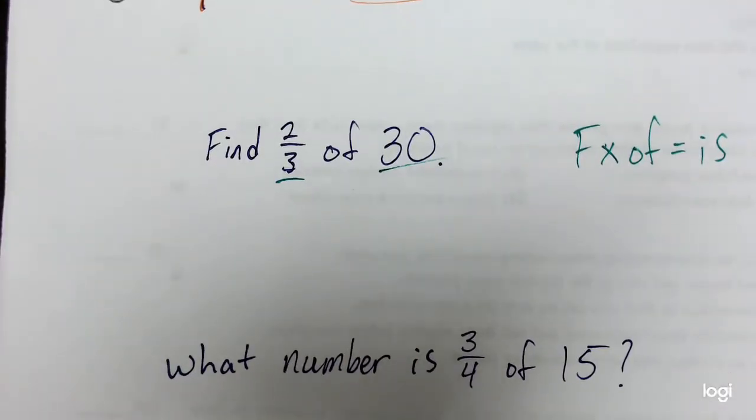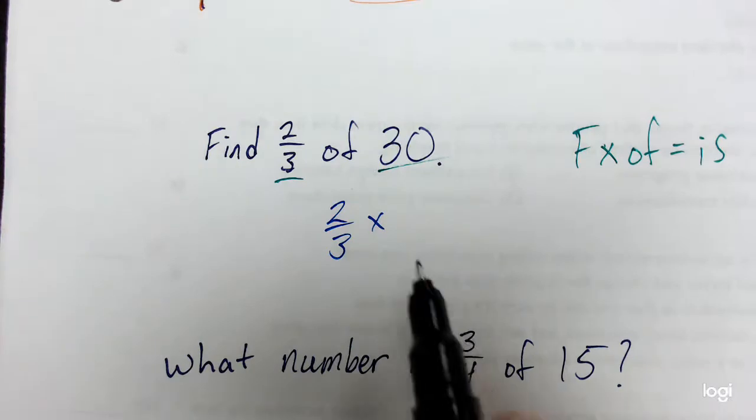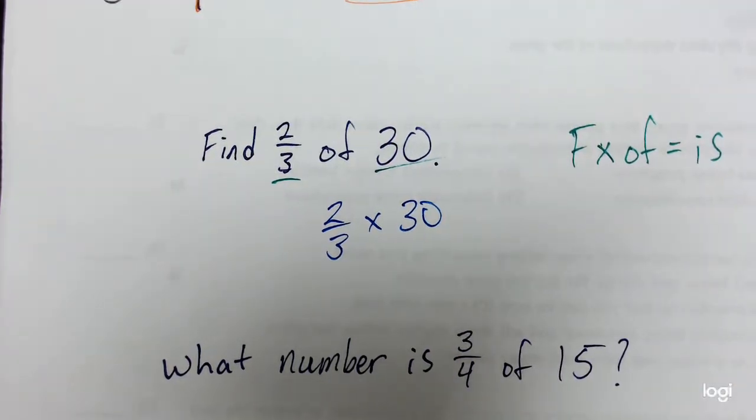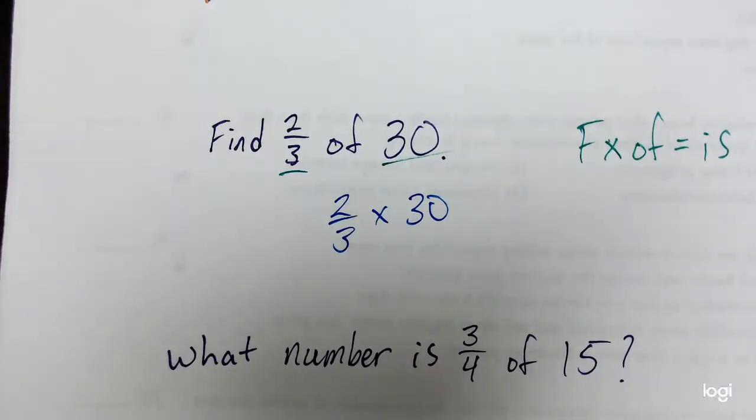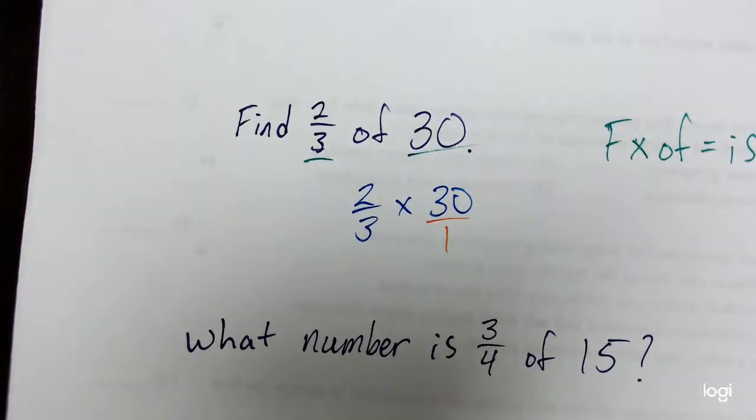So let's go ahead and use that method really quickly. Let's take the fraction, which is 2/3. We'll multiply it by the of number, which is 30, and that will give us the answer. The problem is 30 is a whole number. So if we remember what we did in the previous problem, we're going to take 30, turn it into a fraction by writing it over the number 1, and then I can just multiply as usual.